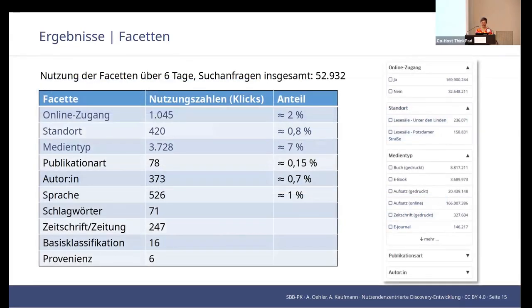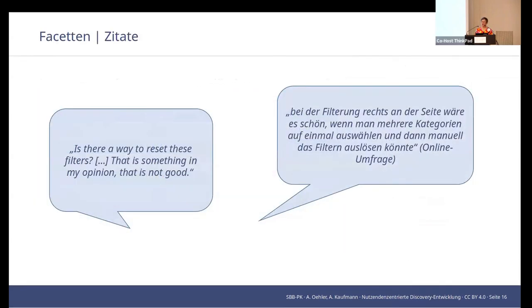Here are a few detailed data points. And here are some original comments. One suggestion in English: when filtering on the right-hand side, it would be nice to have the ability to select several categories at once and trigger filtering manually. These are suggestions for improvement.